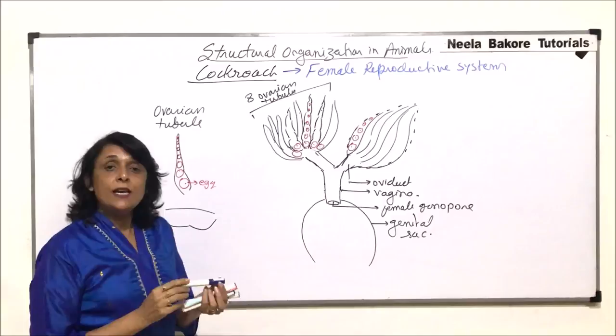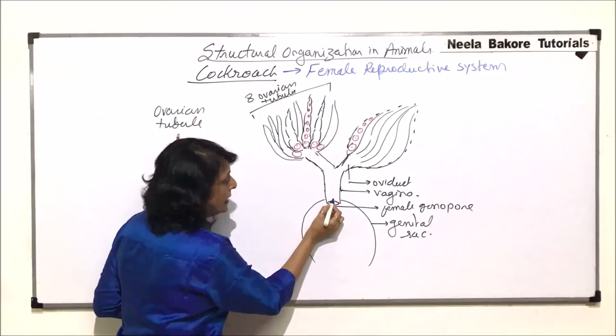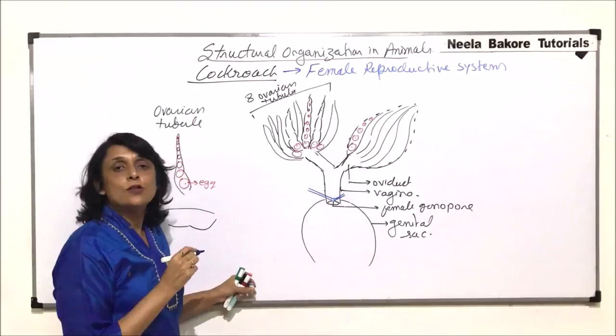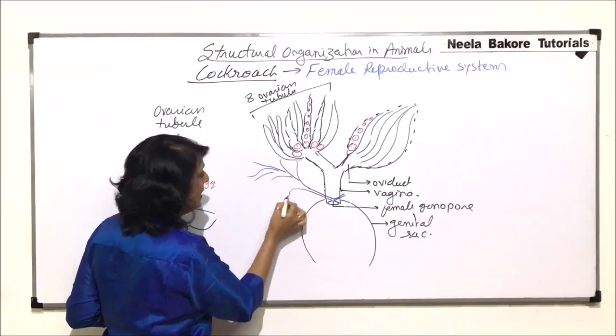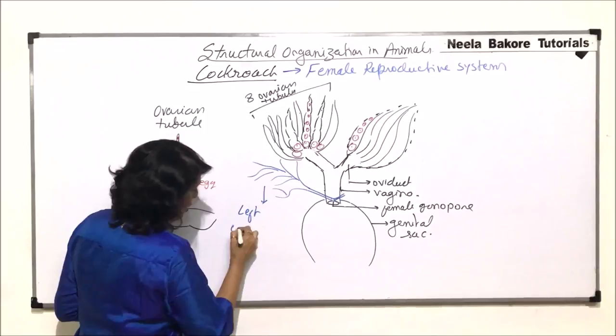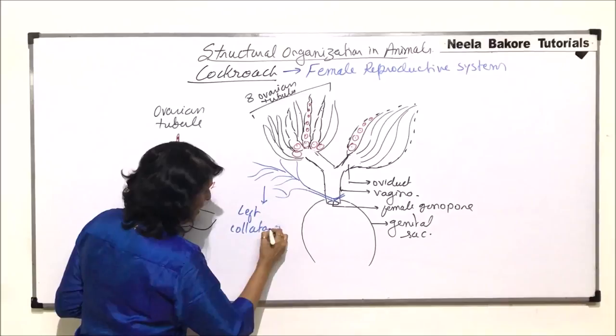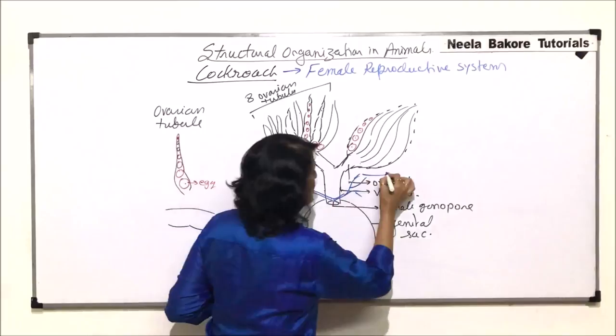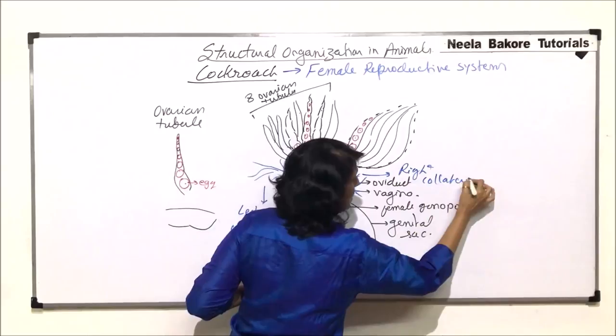Very close to the gonopore, we would find one more opening on the dorsal side. This is a common opening of two glands — one gland on the left side and the other on the right side. This is a highly branched gland called the collateral gland. So this is the left collateral gland, and on this side is the right collateral gland.